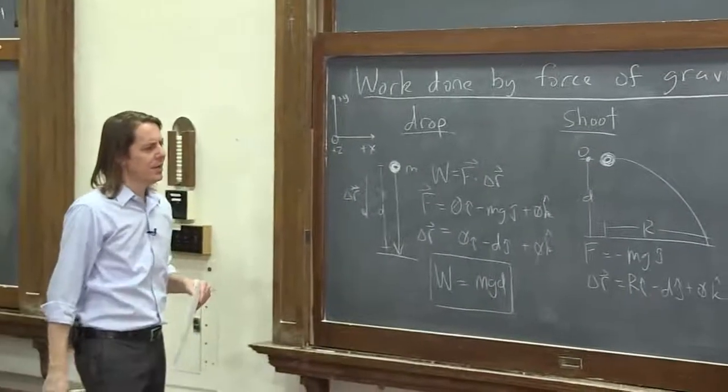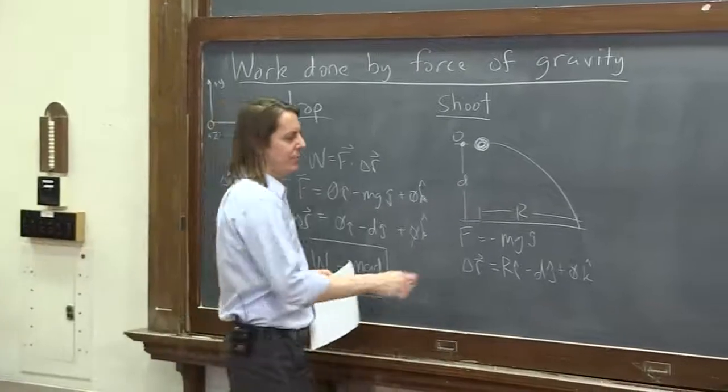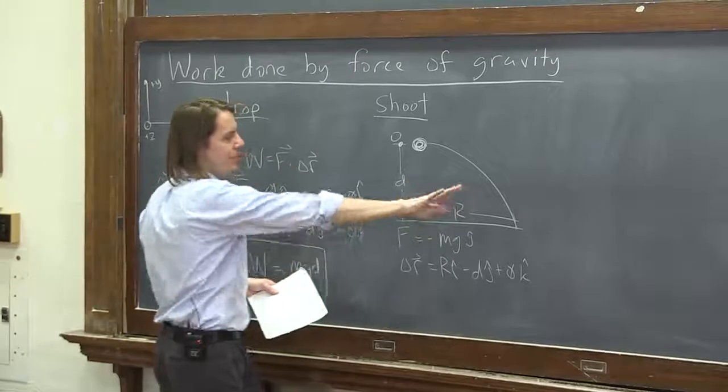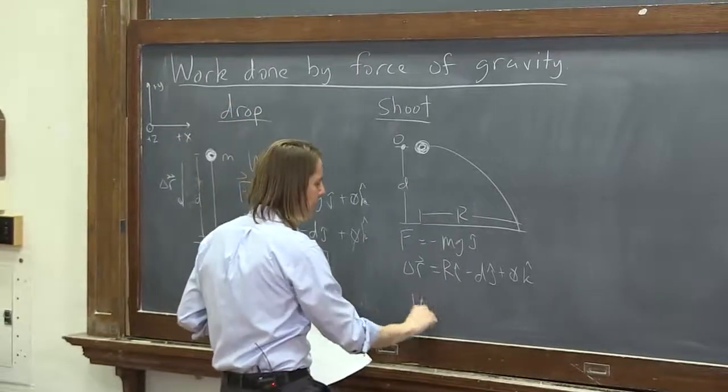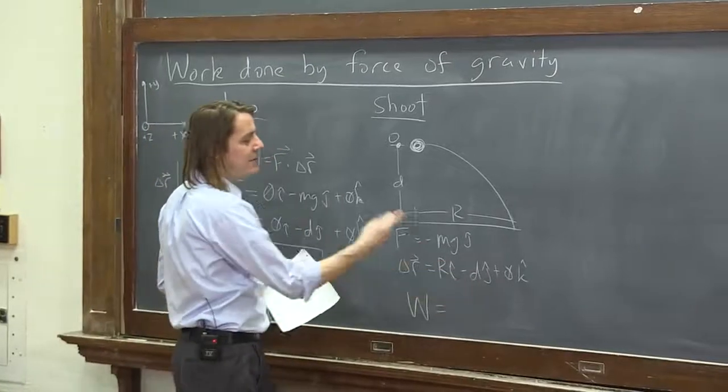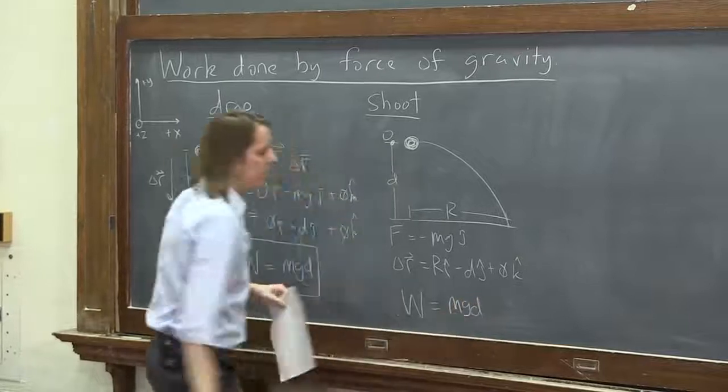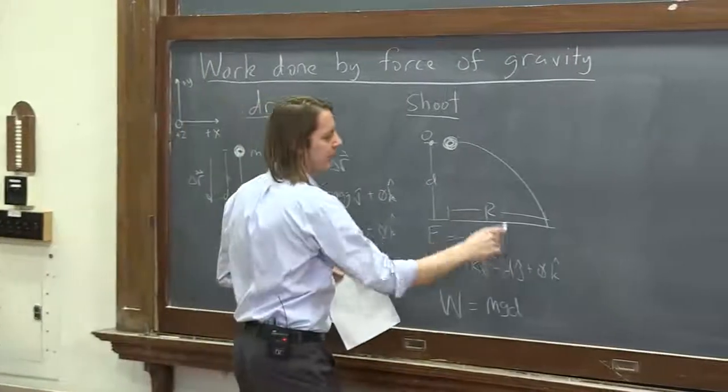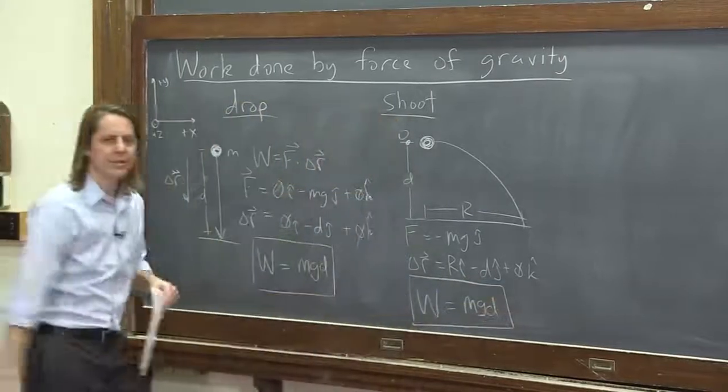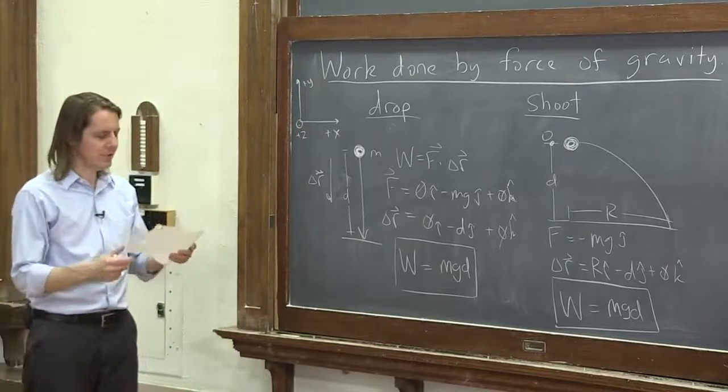So there's your two vectors. And if we want to do this one Cartesian, why not? We would say the i-hat components, well, 0 here, 0 times r is 0. So the fact that it moved that direction doesn't really help us any. The work, 0 for the i-hat contribution, minus mg times minus d, mgd for the y contribution, and then 0 times 0 is 0. So you see that gravity did the same amount of work, whether you dropped it or whether you shot it.